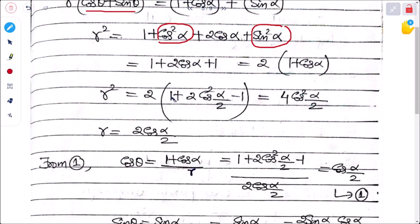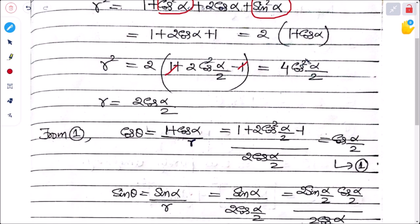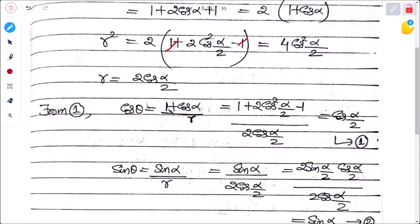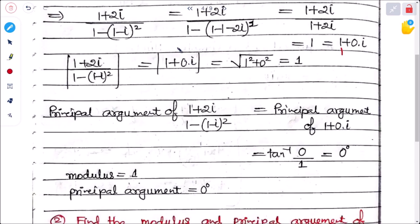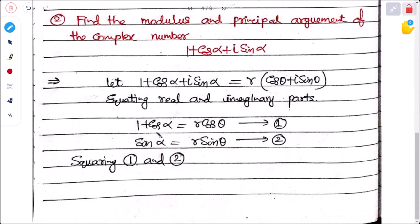Using the identity 1 + cos α = 2cos²(α/2), we get r² = 2 × 2cos²(α/2) = 4cos²(α/2). Therefore r = 2cos(α/2).